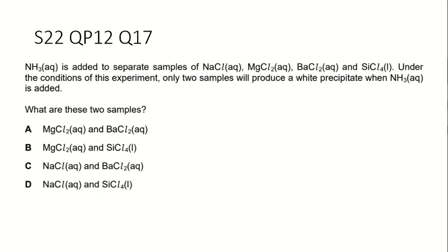This question is about ammonia being added to separate samples of sodium chloride, magnesium chloride, barium chloride, and silicon chloride. Ammonia solution is a weak base solution, so it contains hydroxide ions. It is an aqueous solution, so it contains water.